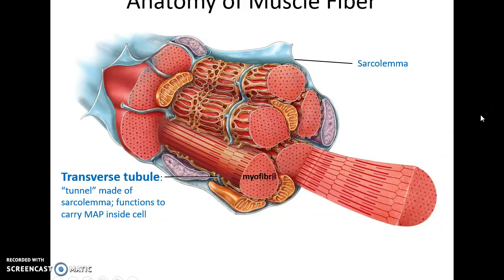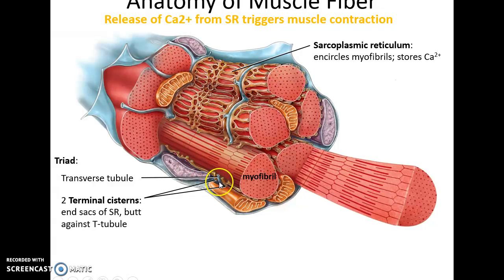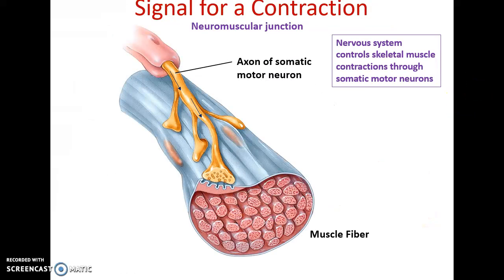The transverse tubules are tunnels, so their inside is filled with the same fluid found outside the muscle fiber. Also found within the muscle fiber is the sarcoplasmic reticulum — a specialized organelle that encircles the myofibrils and stores calcium ions. The terminal cisternae of two different sarcoplasmic reticuli flanking the transverse tubule form a three-structure called a triad.